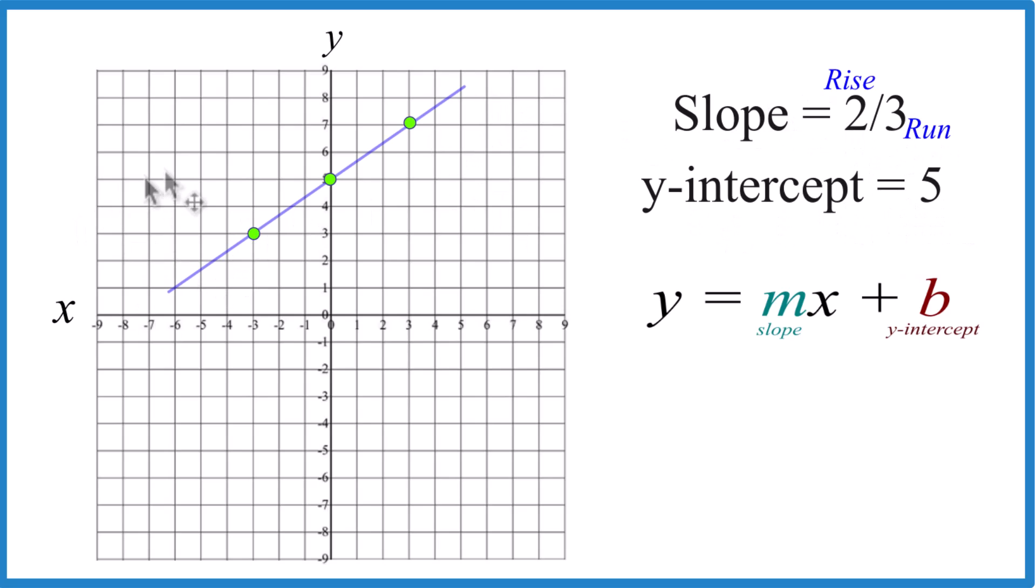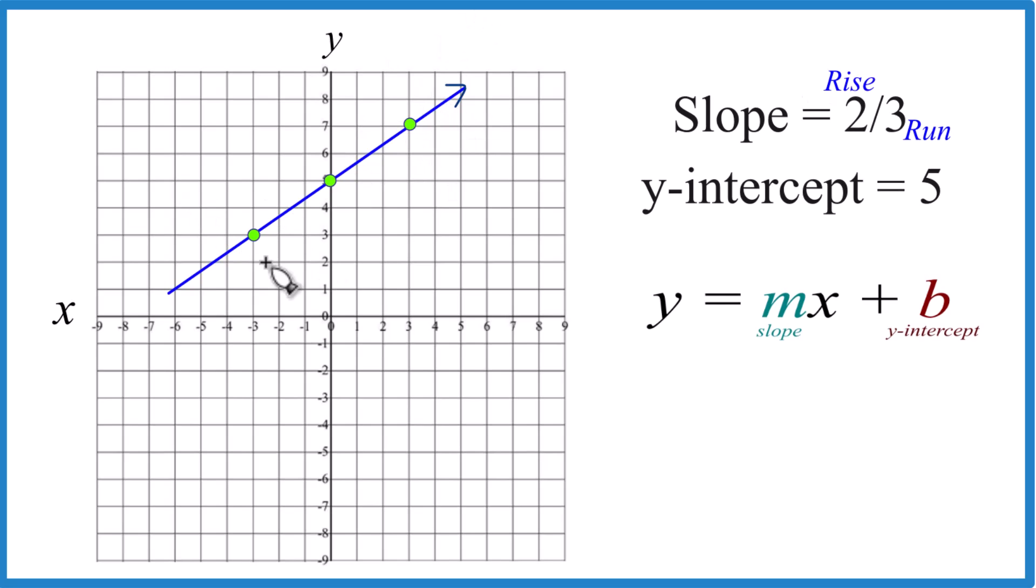Let's put a line through this. Let's put arrows, show it goes to infinity, and that's the graph for when we have the slope of two-thirds and the y-intercept of five.